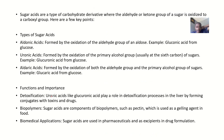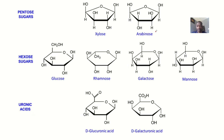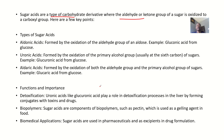Sugar acids are a type of carbohydrate derivative where the aldehyde or ketone groups of a sugar are oxidized to a carboxyl group. For example, in glucuronic acid, this group is changed into a carboxylic group.